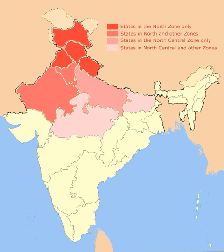The Northern Zonal Council is one of the advisory councils, created in 1956 by the State Reorganisation Act to foster interstate cooperation under the Ministry of Home Affairs, which included the states of Chandigarh, Delhi, Haryana, Himachal Pradesh, Jammu and Kashmir, Punjab and Rajasthan. The Ministry of Culture established the North Culture Zone in Patiala, Punjab on 23 March 1985. It differs from the North Zonal Council in its inclusion of Uttarakhand and the omission of Delhi.